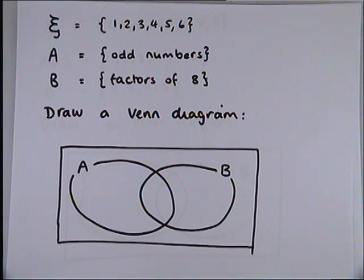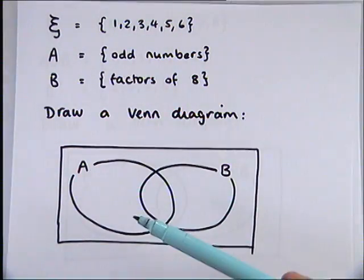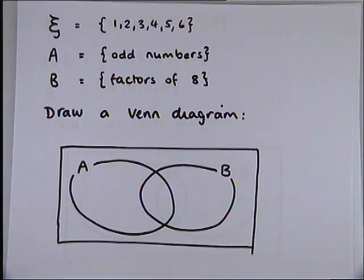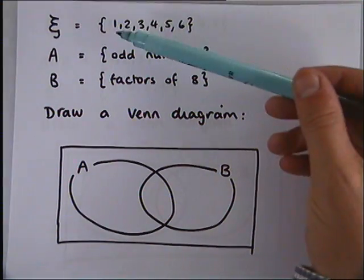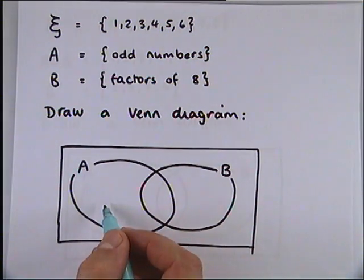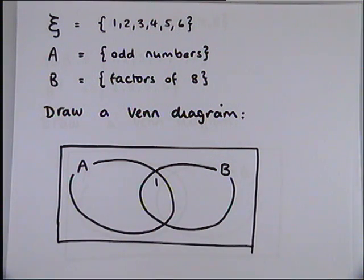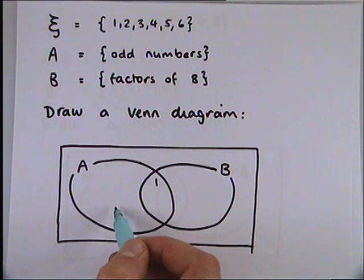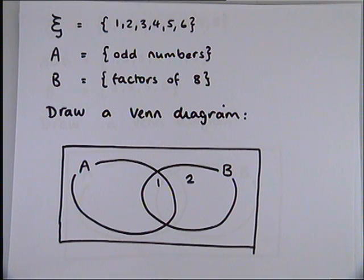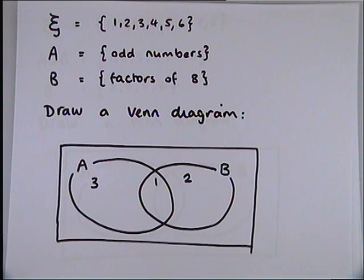So let's just recap. All of these numbers need to go in the Venn diagram. The odd numbers need to go in circle A and the factors of 8 need to go in circle B. Let's go through the elements one at a time. Number 1 is an odd number but it's also a factor of 8, so it goes in the middle. Number 2 is not an odd number but it is a factor of 8, so it goes in there. Number 3 is an odd number but it's not a factor of 8 — it goes in there.